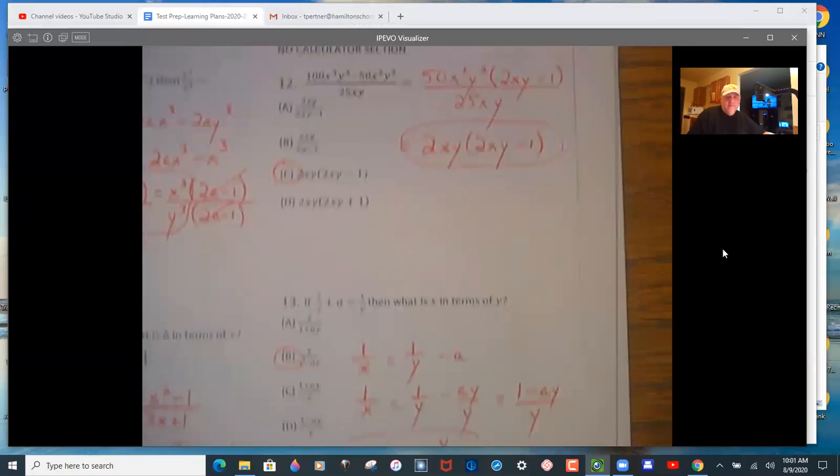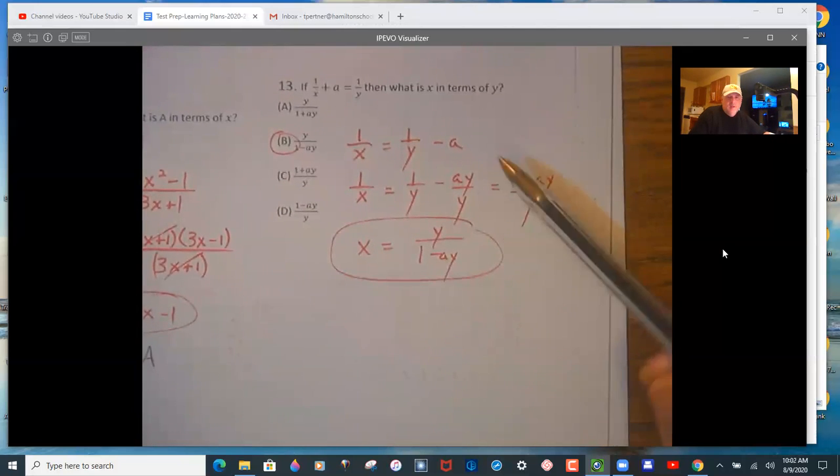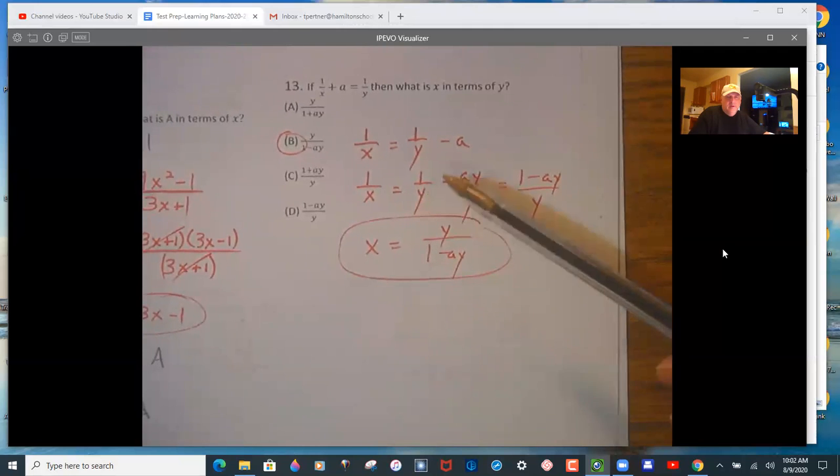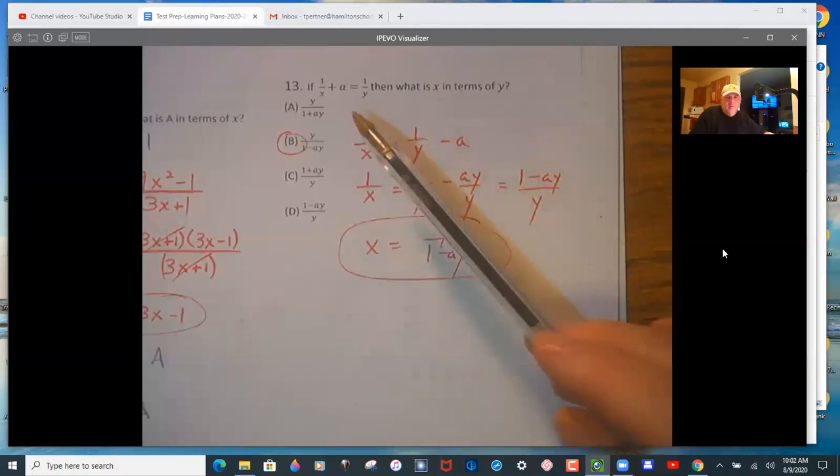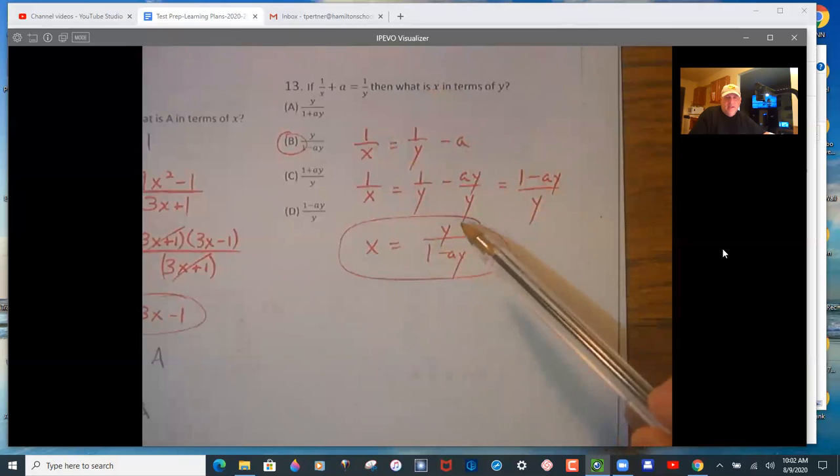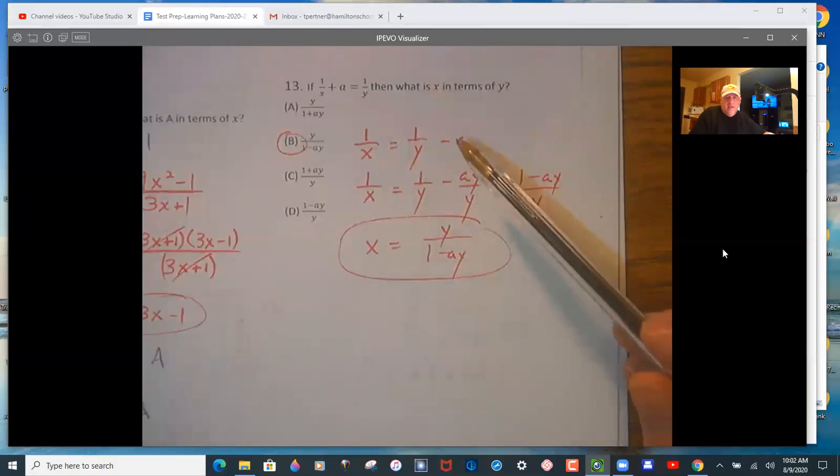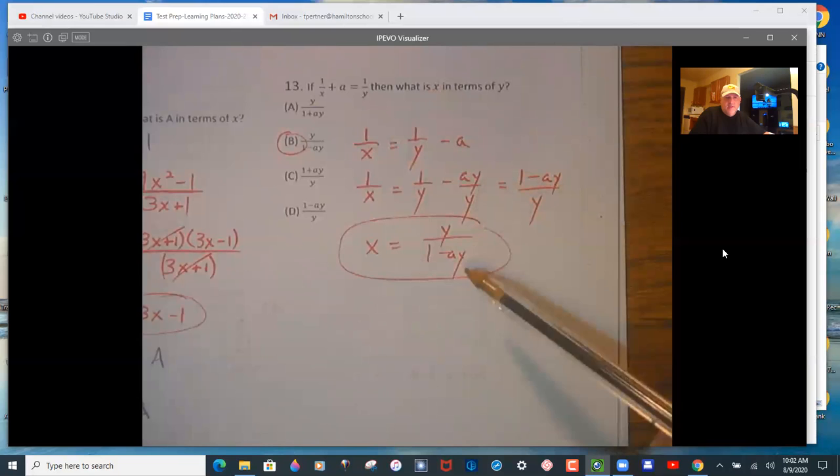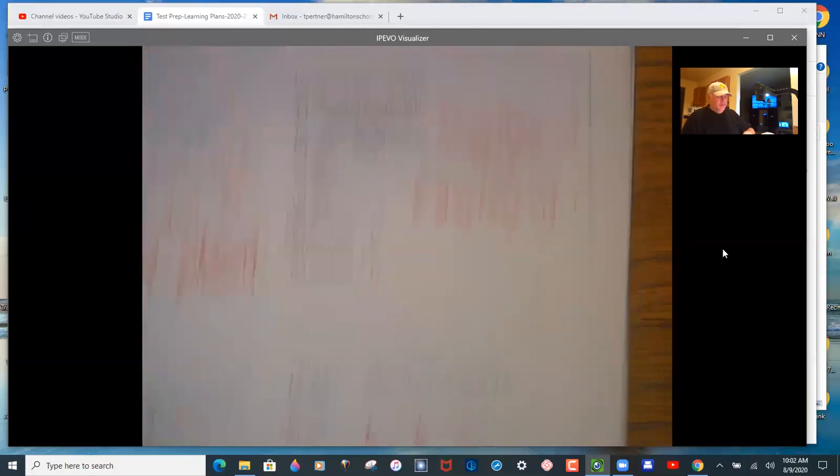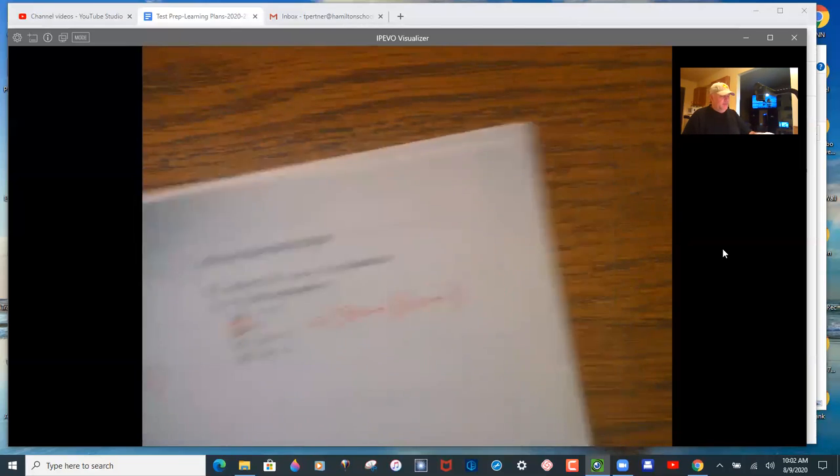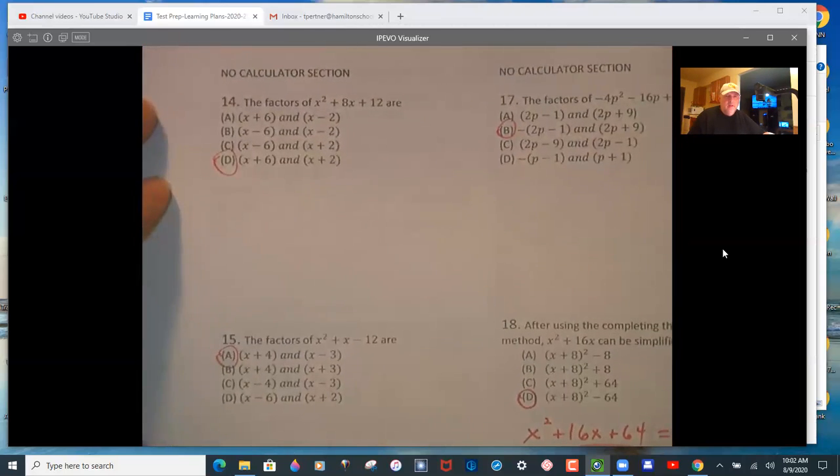But you might see that, to be honest. And here, what is x in terms of y? So you've got to solve for x. So subtract the a over. You need to get a common denominator. And then you need to take the reciprocal. So you multiply a by top and bottom by y. And then condense that fraction and then take its reciprocal. Another kind of hard problem in what we're dealing with.